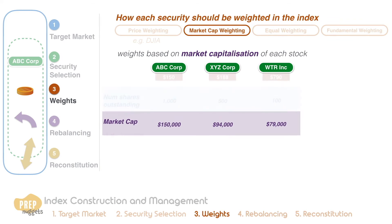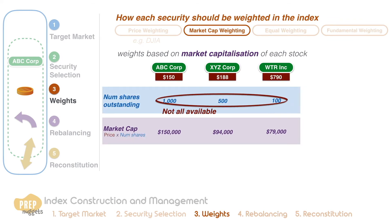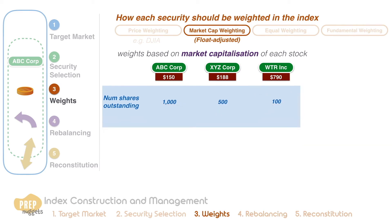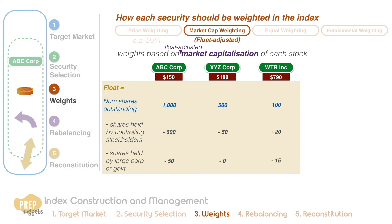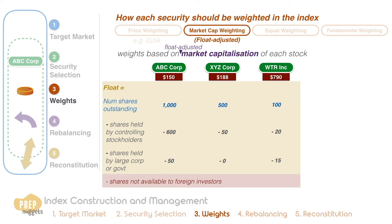However, one issue with market cap weighting is that not all the outstanding shares are available to market investors. For this reason, some index providers use the float-adjusted market cap weighting instead. Typically, a firm's market float is the number of shares that are actually available to the investing public and excludes the shares held by controlling stockholders because they are unlikely to sell their shares. Shares held by large corporations or governments are often excluded as well. Some indexes are designed to represent the investment opportunities of global investors, so they also exclude shares that are not available to foreign investors. Such indexes may be referred to as free float-adjusted market capitalization weighted indexes.